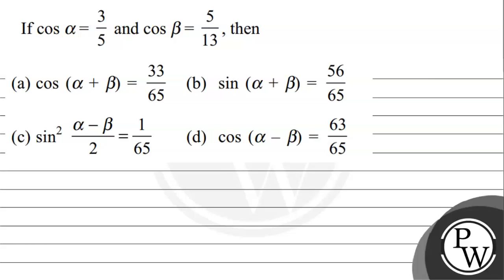Hello students, let's read the question. The question says: if cos α = 3/5 and cos β = 5/13, then — first option: cos(α+β) = 33/65; second option: sin(α+β) = 56/65; third option: sin²((α−β)/2) = 1/65; and the last option: cos(α−β) = 63/65. We need to choose the correct option(s), so let's solve the question.